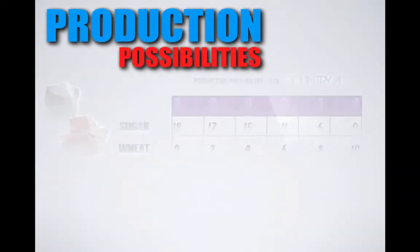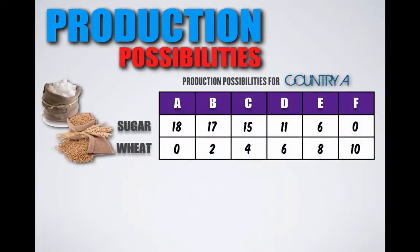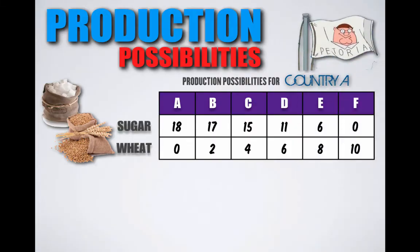The function provided gives us the production possibilities for country A. Let's go ahead and call country A, Petoria.